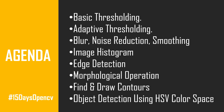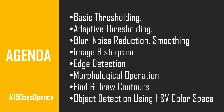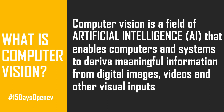Now let's talk about the introduction to OpenCV. Before that, you need to know what computer vision is. Computer vision is a field of artificial intelligence that enables computers and systems to derive meaningful information from digital images, videos, or other visual inputs. If AI enables computers to think, computer vision enables computers to see, observe, and understand.